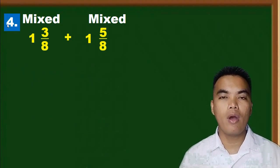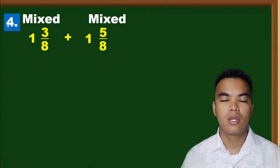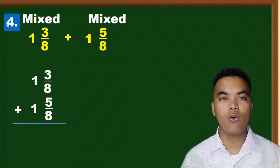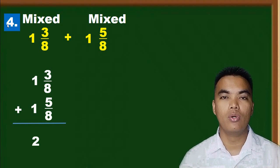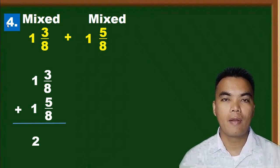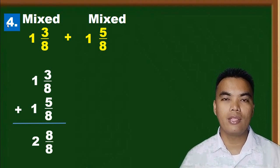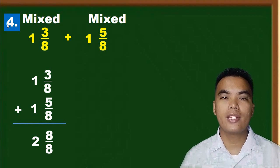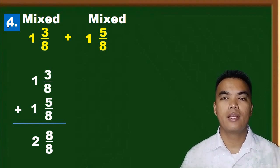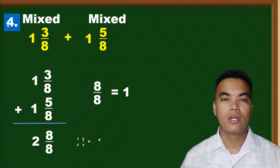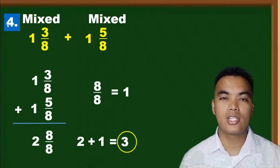We have one and three over eight plus one and five over eight. Using vertical form: one plus one equals two, and three over eight plus five over eight equals eight over eight. Since eight over eight equals one, we have two plus one, and our final answer is three.